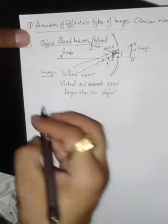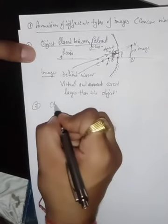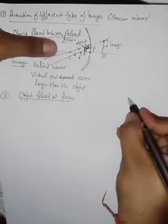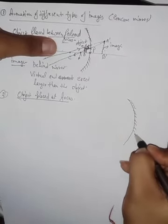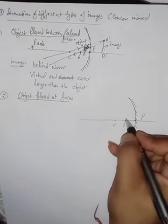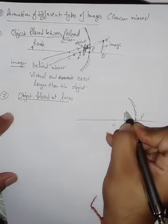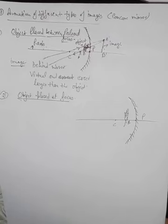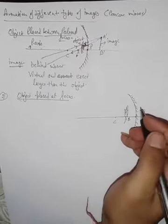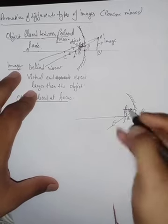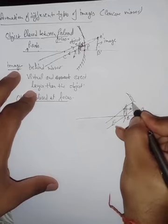Second case: when the object is placed at the focus. We draw a concave mirror with principal axis, focus, center of curvature and pole. When the object is placed at the focus, parallel rays from infinity strike the surface and move towards the focus. The second ray comes from the center of curvature.